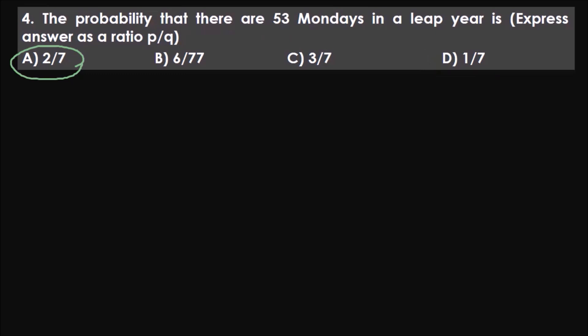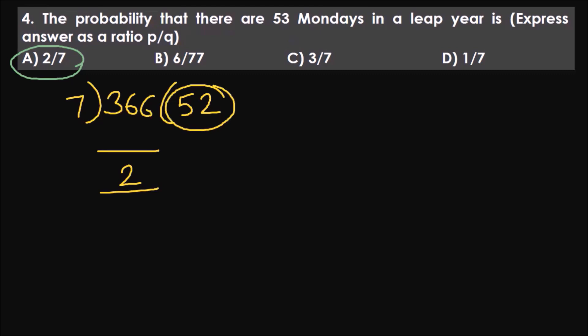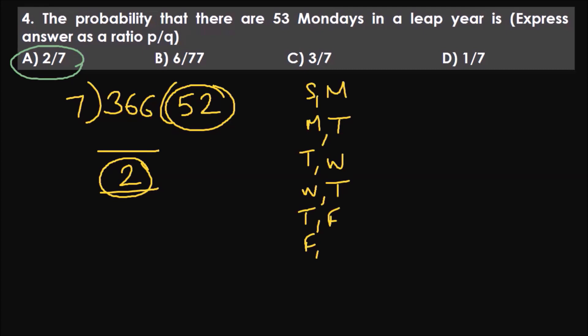That means 52 complete weeks, so 52 Mondays are guaranteed — 100% probability. But they are asking for 53 Mondays. We have two extra days remaining. Those two days can be: Sunday-Monday, Monday-Tuesday, Tuesday-Wednesday, Wednesday-Thursday, Thursday-Friday, Friday-Saturday, or Saturday-Sunday. They are asking for the probability of 53 Mondays across this entire sample space.